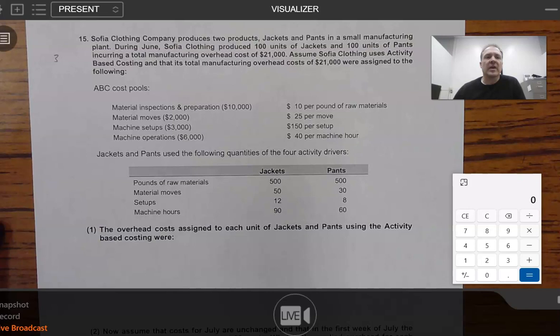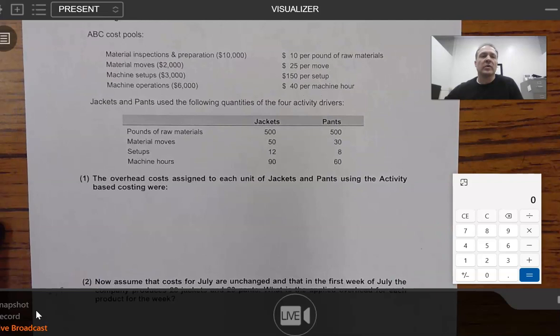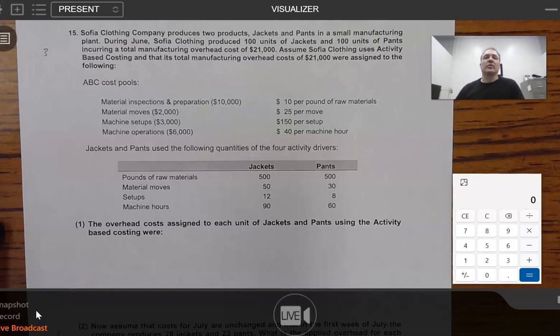So let's see what we've got here. Looks like we're going to have two different requirements on this question. Notice we've got a number one and a number two here. When we see this, oftentimes we will have to get our answer to the first part before we can move on to the second part. We've talked about this many times now. Whenever you have a question that starts here and ends way down here, the first thing we want to do is read what they're wanting. So it says, for number one, the overhead costs assigned to each unit of jackets and pants using the activity-based costing method. Now we can go back up and look at our scenario.